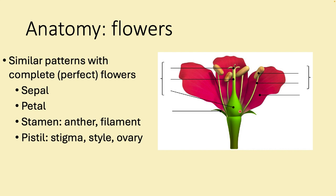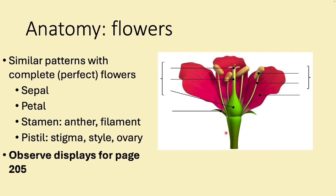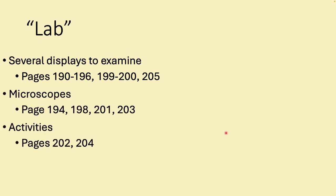When many flowers are clustered in a row, you get an aggregate fruit. Some fruits are small and simple like peas. When parts other than the ovary remain attached and contribute to the fruit body, those are accessory fruits — like apples. For the lab, there are displays to observe, microscope slides, a stomata slide-making activity, and a dendrochronology activity.